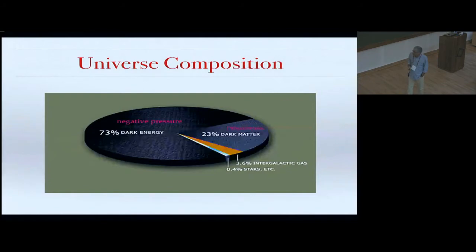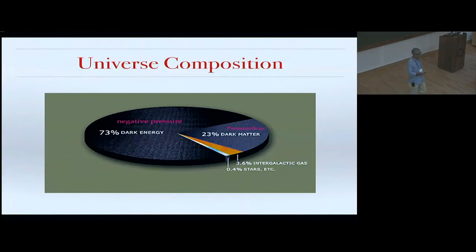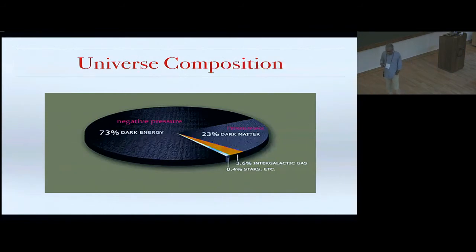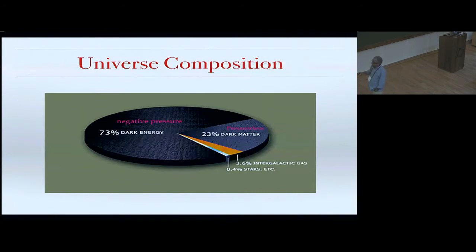The universe composition: except for around 4% in intergalactic dust, stars, and galaxies, the rest — 96% — is in dark components. Around a quarter of that is dark matter, which creates the attractive gravitational potential so that structure can form. The rest, 73%, is dark energy, which determines the destiny of the universe. Both are dark components — they don't emit light. The key difference is dark energy has a large negative pressure driving acceleration, while dark matter is pressureless and forms structures.